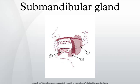Lying superior to the digastric muscles, each submandibular gland is divided into superficial and deep lobes, which are separated by the mylohyoid muscle. The superficial lobe comprises most of the gland, but the mylohyoid muscle runs under it. The deep lobe is the smaller part.